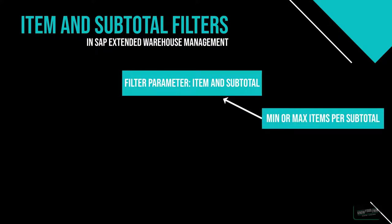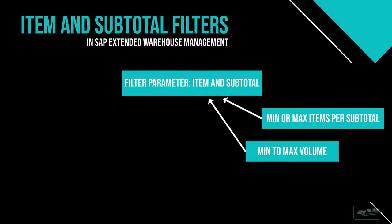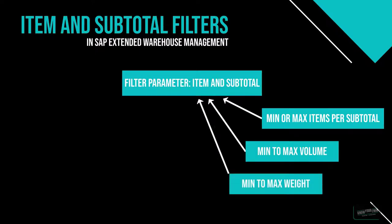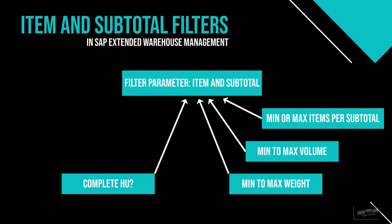Some parameter filters we can use: the minimum or maximum number of items per subtotal, meaning we want to have a minimum or maximum number of items within the warehouse order; a minimum to maximum volume, meaning we want a specific volume-based range within the warehouse orders; a minimum to maximum weight, which is basically the same approach as with the volume but for the weight of the products; and complete handling unit, which means we can force the system to do a full pallet withdrawal for example.